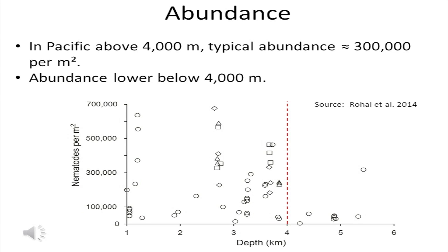I'm showing here some data from the Pacific. Notice that above 4,000 meters depth, nematodes have a typical value of about 300,000 per square meter. But deeper than that, abundances are much lower. It will be interesting as data accumulate to see whether this dramatic difference at about 4,000 meters persists.